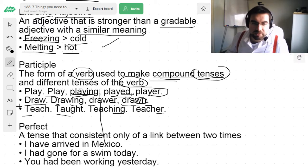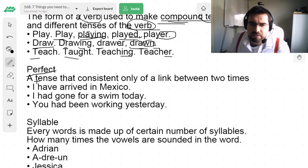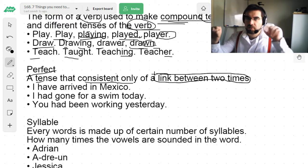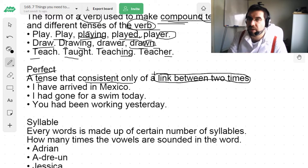And then we have the perfect. Perfect. In terms of tenses. A tense that consists only of a link between two times. Between two times. The perfect tense, the past perfect tense, the perfect continuous tense. Things like that.